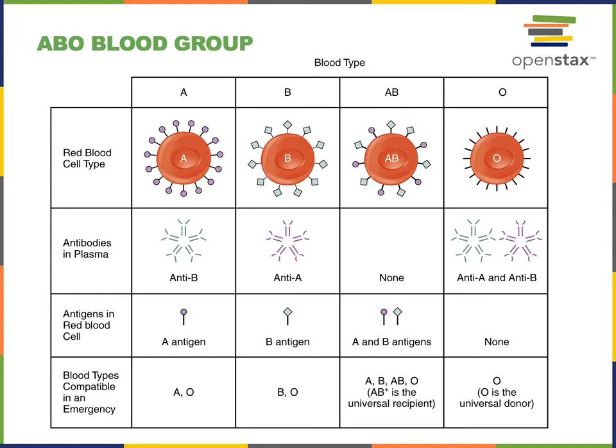Type O blood does not have the A or the B antigens, and therefore a patient with type O blood produces antibodies against the A and the B antigens. Therefore, a patient with type O blood cannot safely receive a transfusion of type A blood, type B blood, or type AB blood. However, type O blood is the universal donor because we could safely give a transfusion of type O blood to a patient who has type A blood, type B blood, or type AB blood.